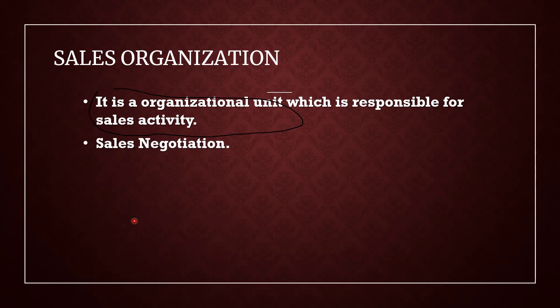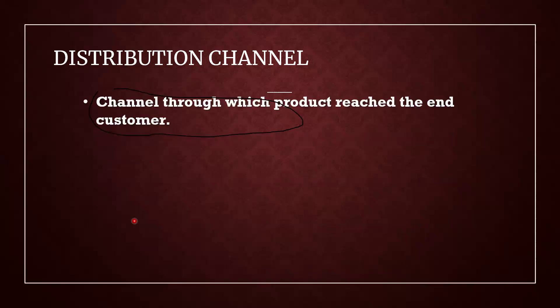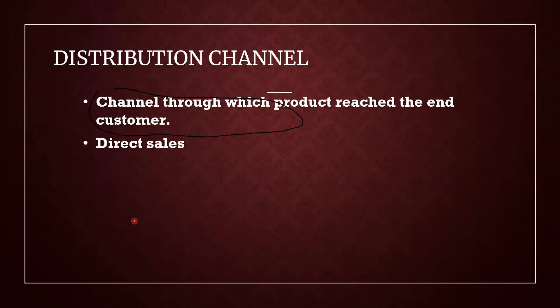Next they have asked: what is Distribution Channel? It is a channel through which stock reaches the end customer — that is, the material or product reaches the end customer. They also asked what distribution channels are available. Examples include direct sales and internet sales.